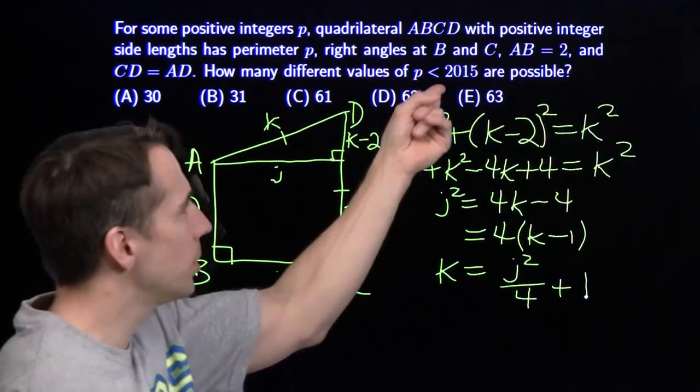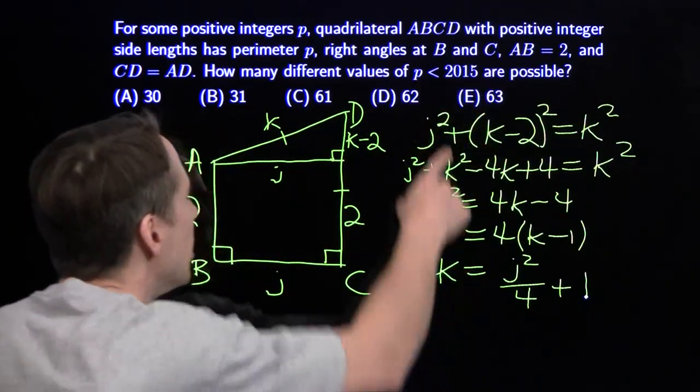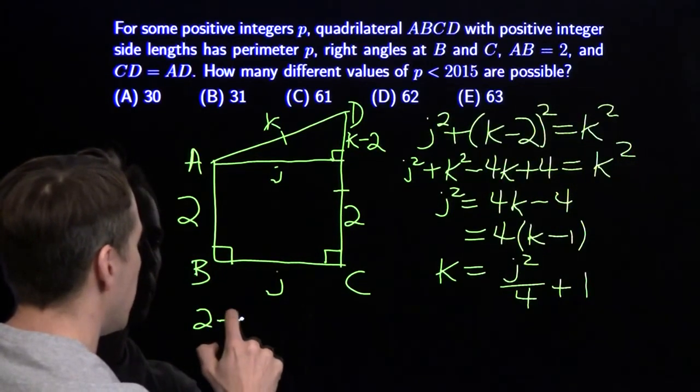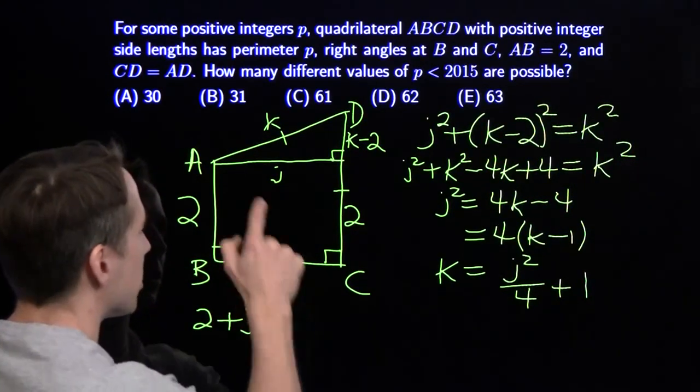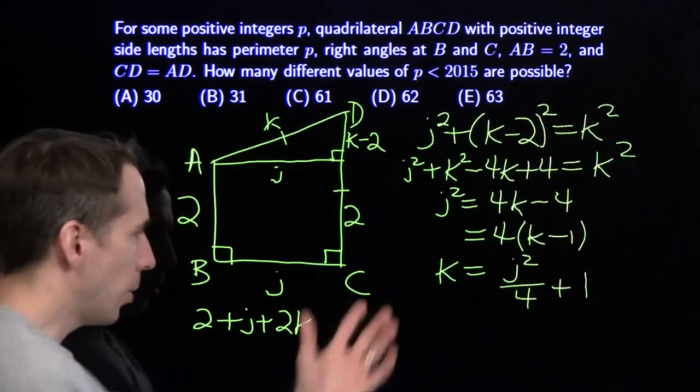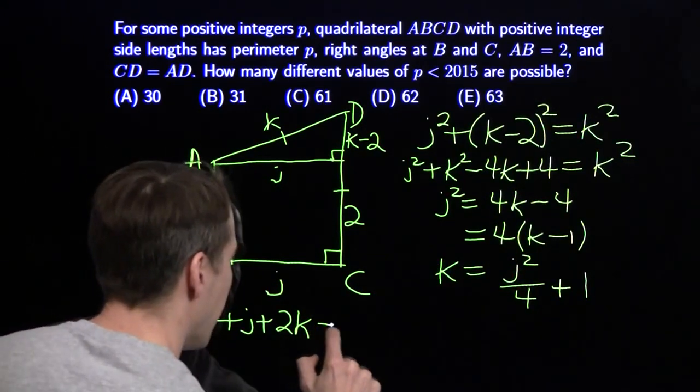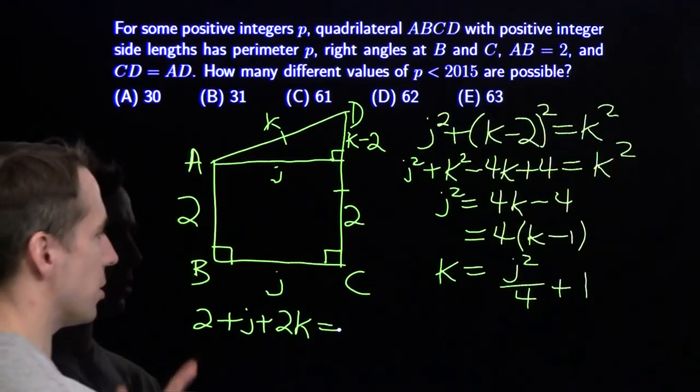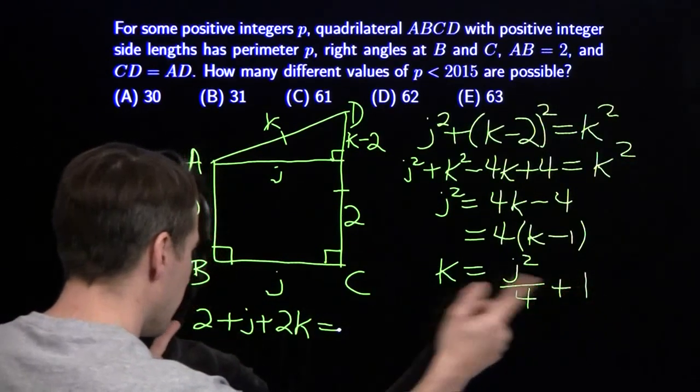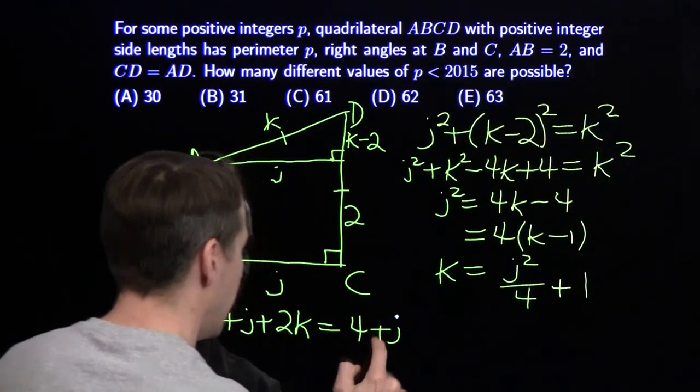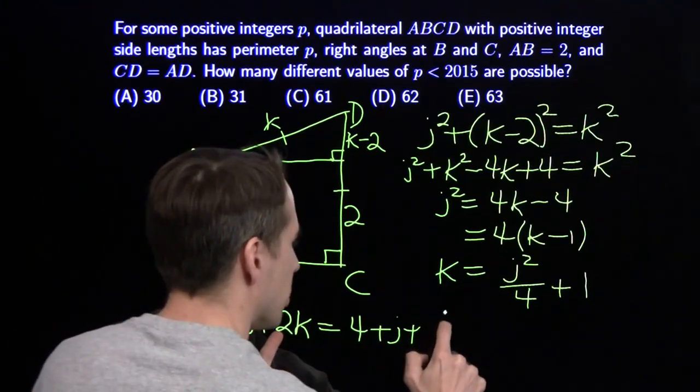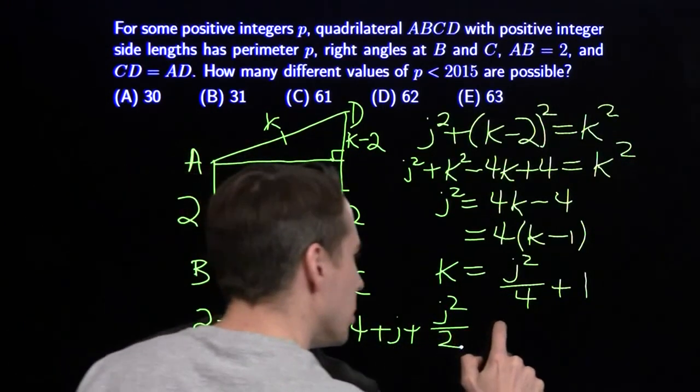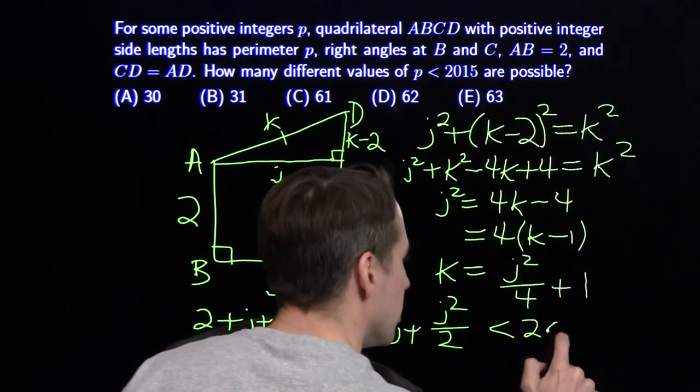Now the question is, when is that perimeter less than 2015? So let's write an expression for that perimeter. We got 2 plus J plus 2K. Now we have this expression for K so we can get rid of that. It'll be 2 plus J plus double this. Well, 2 times the 1 gives us another 2. So it'll be 4 plus J plus J squared over 2. And we need this expression to be less than 2015.